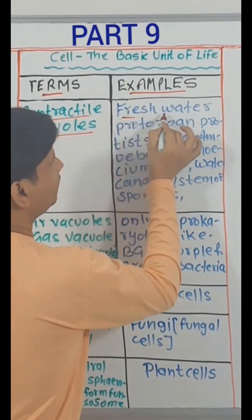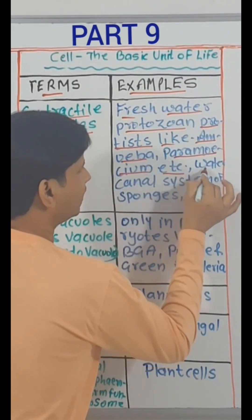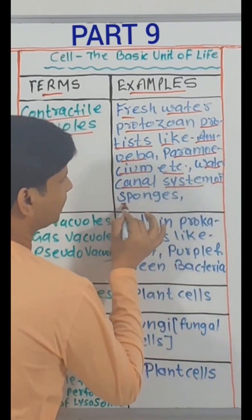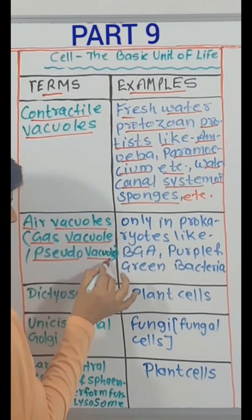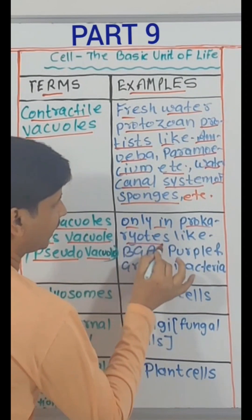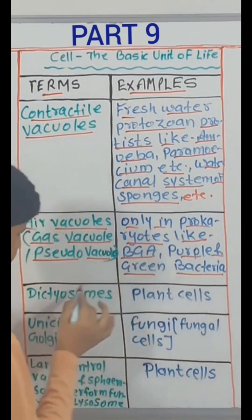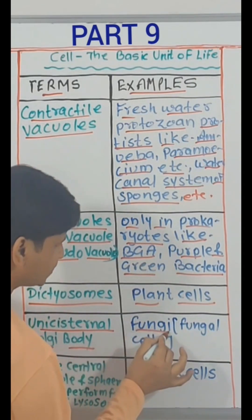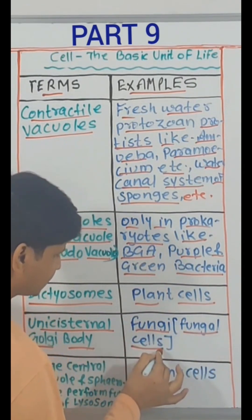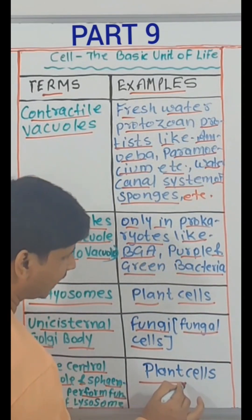Contractile vacuoles — freshwater protozoan protists like Amoeba, Paramecium, etc.; water canal system of sponges. Air vacuole, that is gas vacuole or pseudovacuole — only in prokaryotes like blue-green algae and purple and green bacteria. Dictyosomes — plant cells. Unicisternal Golgi body — fungi, that is fungal cells. Large central vacuole and spherosome perform function of lysosome — plant cells.